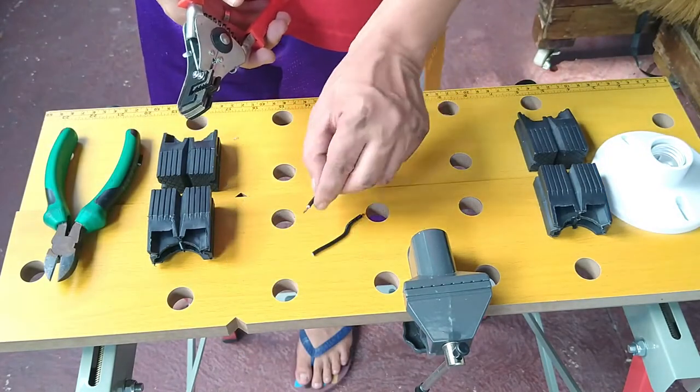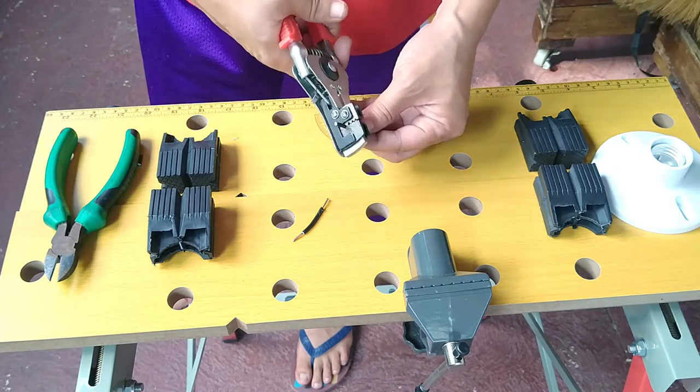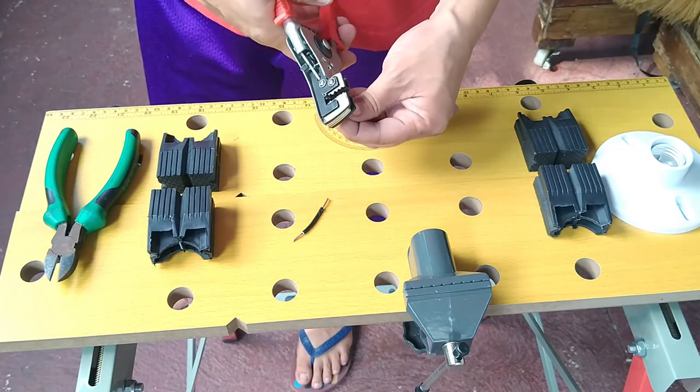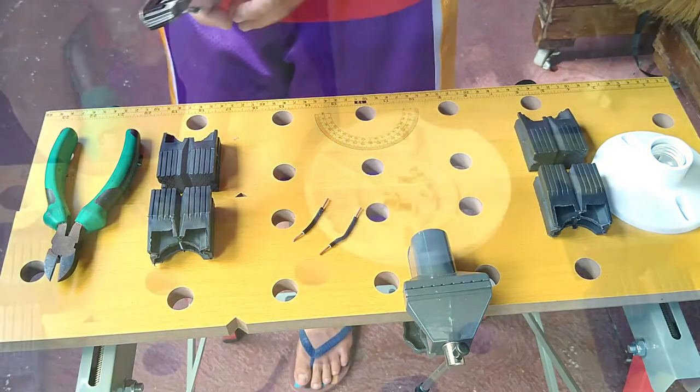Then, strip one side about a quarter of an inch and the other side about half an inch. Cut as necessary to arrive at the right measurements.